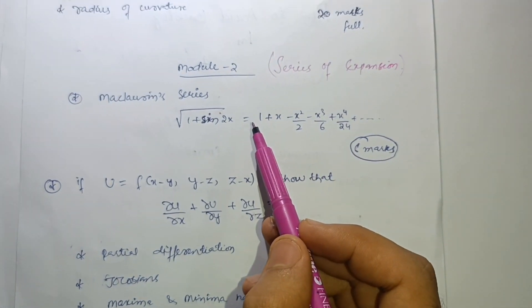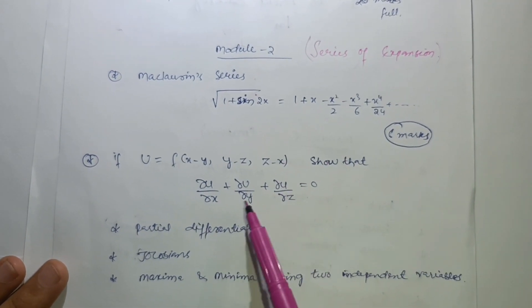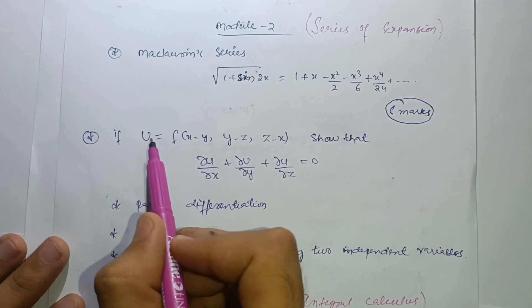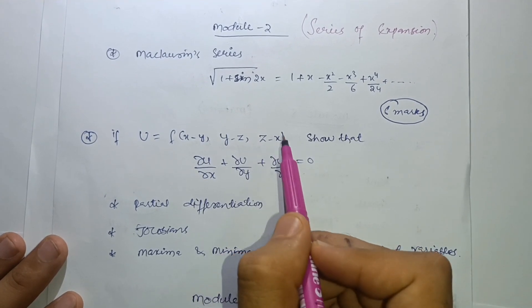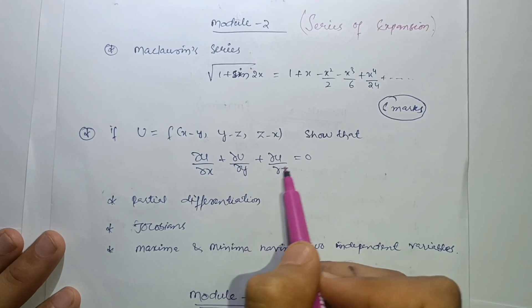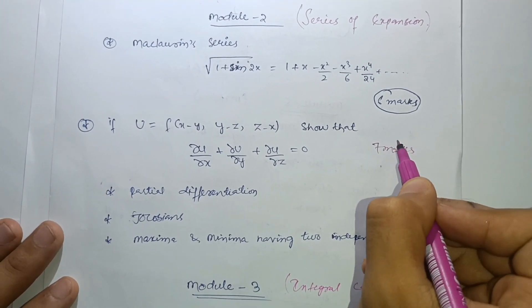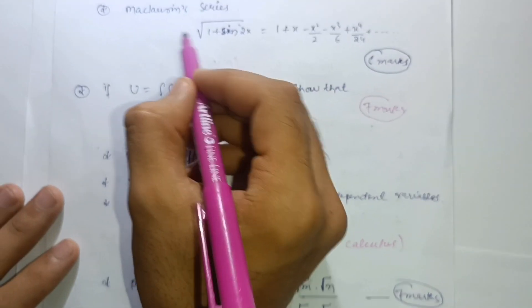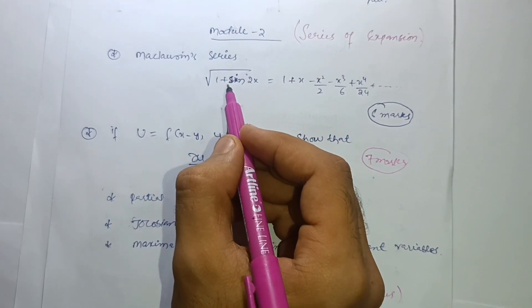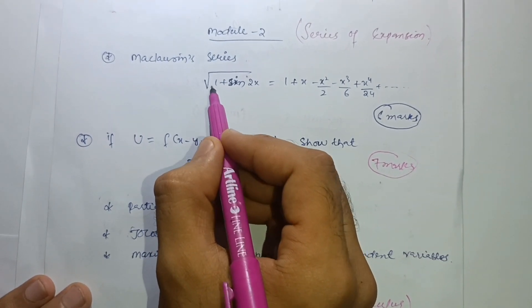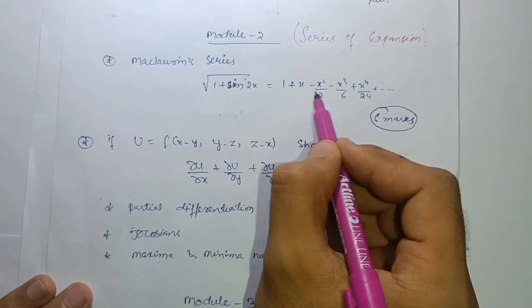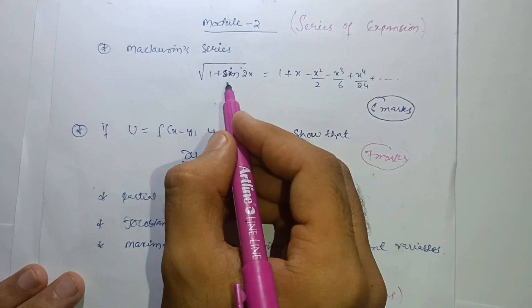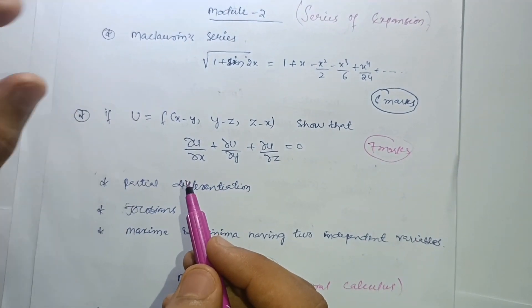Module 2 has five topics, but the definite question always asked in VTU examination is: if u = f(x−y, y−z, z−x), show that ∂u/∂x + ∂u/∂y + ∂u/∂z = 0. This carries seven marks. The next probable question is on the Maclaurin series: expand √(1 + sin 2x) = 1 + x − x²/2 − x³/6 + x⁴/24 + ... This carries six marks.